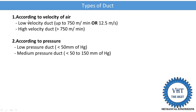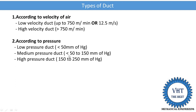In the medium pressure duct, the pressure of the air passing through the duct is between 50 to 150 mm of Hg — the lower value is by mistake written as 250, it should be 50. Next is the high pressure duct, in which the pressure of the air is between 150 mm of Hg to 250 mm of Hg. That is known as the high pressure duct.